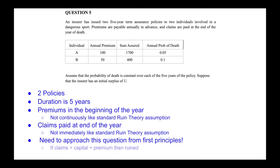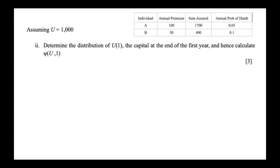Ruin occurs when claims are greater than capital plus premiums — that's the condition we need to look at. We don't have a fancy formula to plug values into; we need to go back to first principles. Part two assumes initial capital of 1,000 and asks us to determine the distribution of capital after one year and calculate the probability of ruin after one year.